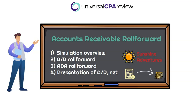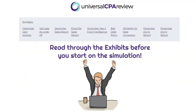Allowance for doubtful accounts is a mouthful. Once we solve those two balances, they're necessary to present accounts receivable net in the financial statements — at its net realizable value, meaning how much value the company will actually extract from that balance. What makes this simulation challenging is the number of exhibits. This is a trend that isn't stopping on the FAR section. It's extremely important to flip through all the exhibits before you start so you know what information is available to you.